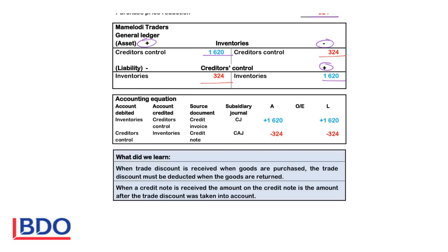In the accounting equation, when we buy the goods, we will indicate that the inventory asset increases on the debit side. Assets will increase with the price after the trade discount was deducted. The account credited will be creditors controlled because we owe money to them, so liabilities will increase. When we buy goods on credit, we will receive a credit invoice and we will record it in the creditors journal.